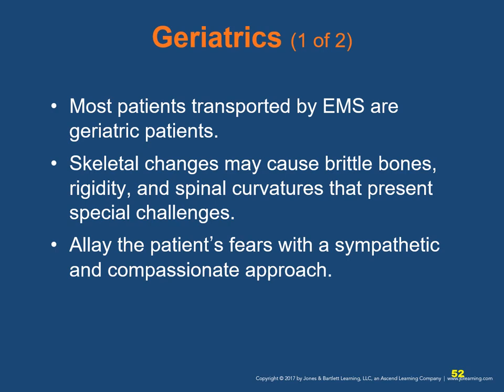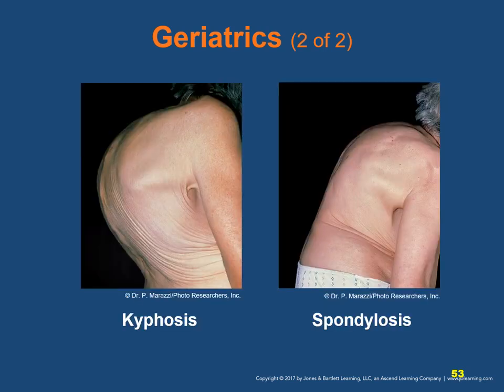Most patients transported by EMS are geriatric patients. Skeletal changes in older people may cause brittle bones, rigidity, and spinal curvatures, which present special challenges in packaging and moving. Many patients cannot lie supine on a backboard or scoop stretcher without causing further injury — consider geriatric-specific immobilization devices such as vacuum mattresses and consult your local protocols. For many older patients, the fear of illness and disability is ever-present, and an emergency trip to the hospital can be terrifying and disorienting. Allay the patient's fears with a sympathetic and compassionate approach — slow down, explain, and anticipate. Common skeletal changes in geriatric patients include kyphosis and spondylosis.